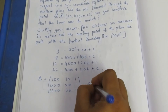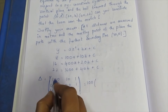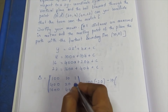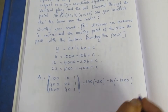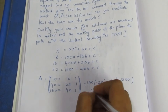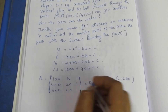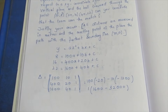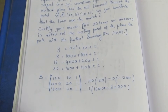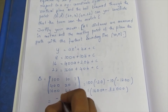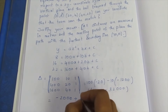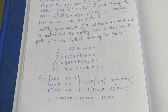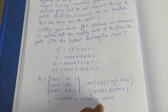We expand along the first row to find the determinant value. 100 into (20 − 40) minus 10 into (400 − 1600) plus 1 into (400×40 − 20×1600). This gives 100(−20) − 10(−1200) + (16000 − 32000), which is −2000 + 12000 − 16000 = −6000.